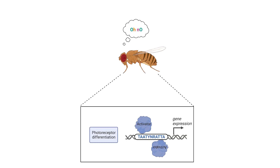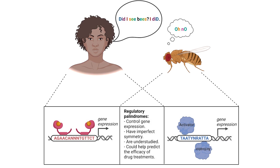In Drosophila terminal differentiation, the differential expression of phototransduction genes in all photoreceptor neurons and rhodopsin genes in a subset of photoreceptor neurons is based on specific, imperfectly palindromic motifs with different degrees of half-site symmetry. We find that regulatory palindromes control gene expression, have imperfect symmetry, and could have wider implications if studied more in depth. We discuss mechanisms that explain the predominance of imperfect palindromes over perfect palindromes in regulatory DNA, and propose that asymmetric inverted repeats are an evolutionarily conserved mechanism for differential gene expression.